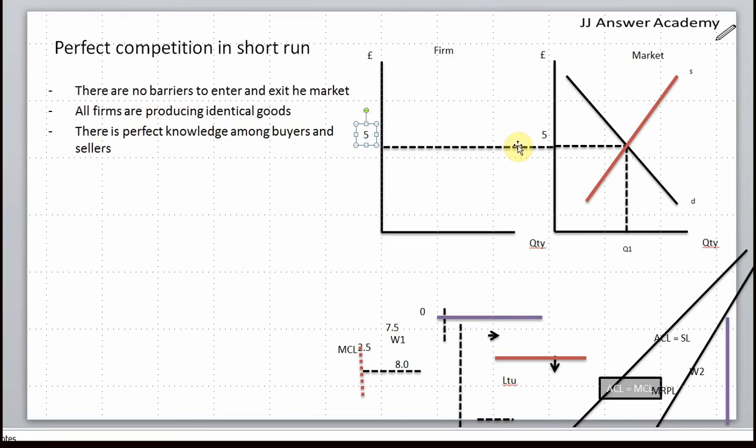That is the market demand curve for the firm, and this is the long run average cost of the firm. Let's say it's the marginal cost curve. The firm can sell as many goods as it wants at the market price, so price equals average revenue equals marginal revenue.